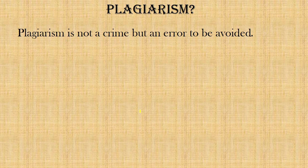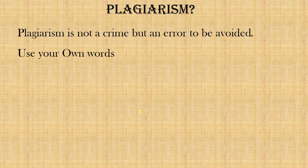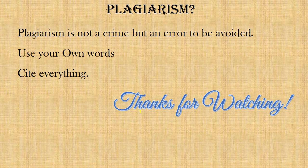To summarize: plagiarism is not a crime — if it were a crime, even one percent would not be allowed in any research article. It is actually an error to be avoided or reduced. Always use your own words. Researchers who are not proficient in the language tend to take the same words of an author and forget to cite it, and that leads to plagiarism. The third important thing is to cite everything you write in your research. Thanks for watching this video.